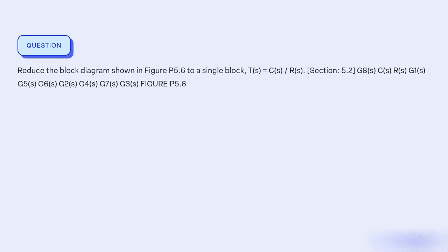The objective is to simplify the block diagram in figure 5.6 by combining all the blocks into a single block, T(s), which represents the transfer function C(s)/R(s).